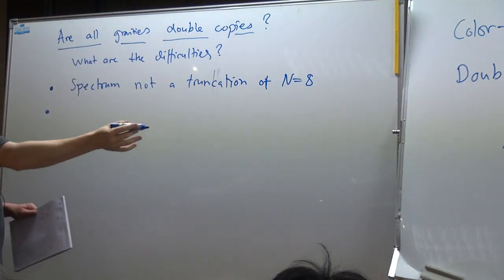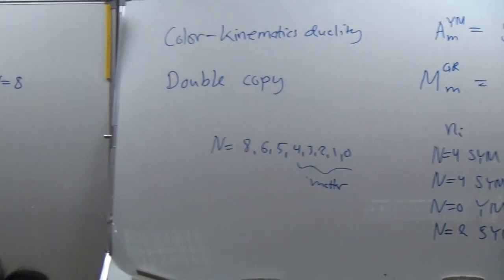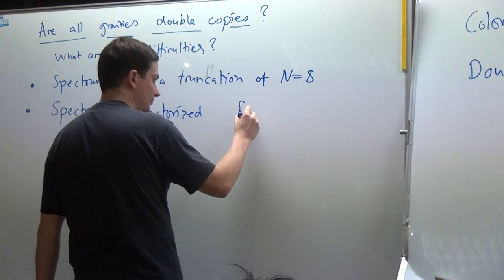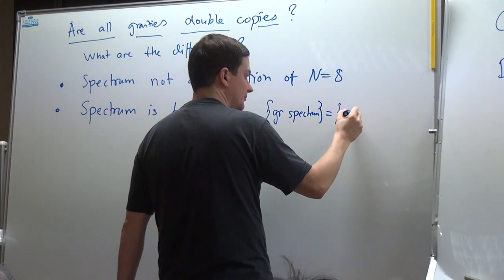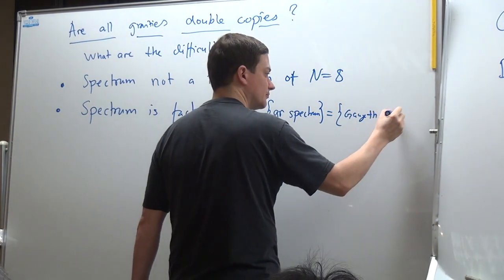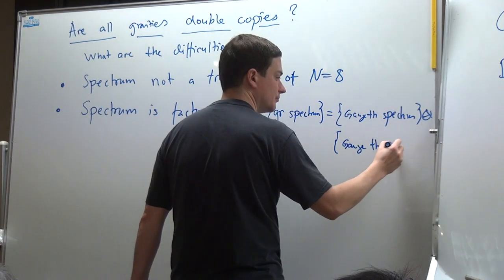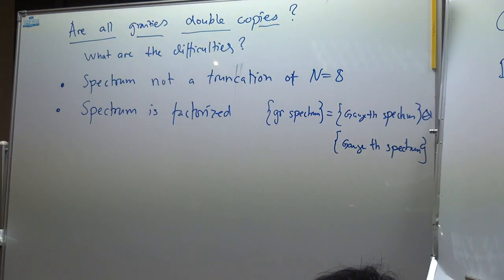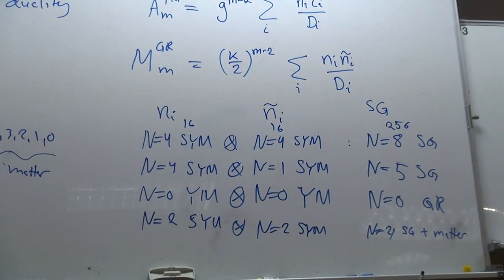Furthermore, all these theories here are essentially factorized — the spectrum is factorized. What I mean by that is that if you look at the gravity spectrum, it's obviously a tensor product of two gauge theories. For example, N=8 supergravity spectrum is obviously a tensor product of the N=4 spectrum — there are 256 states, and 16 times 16 is 256. But this is not true in general.